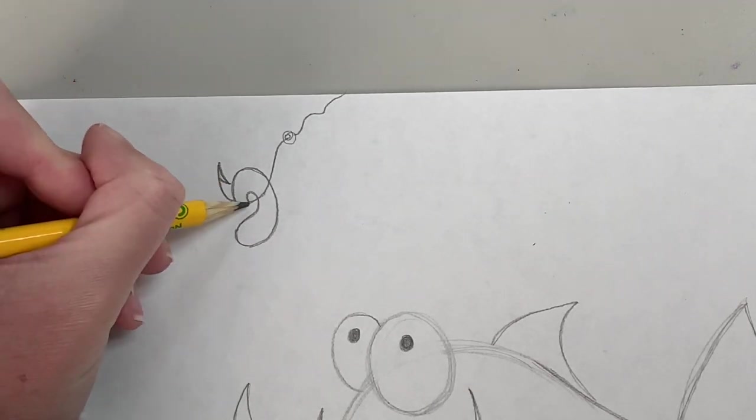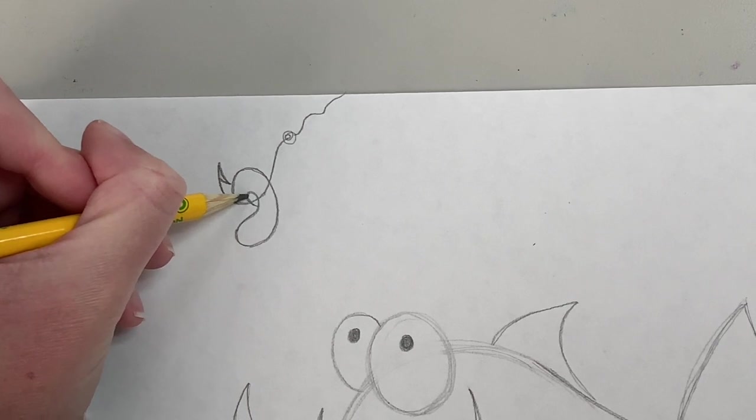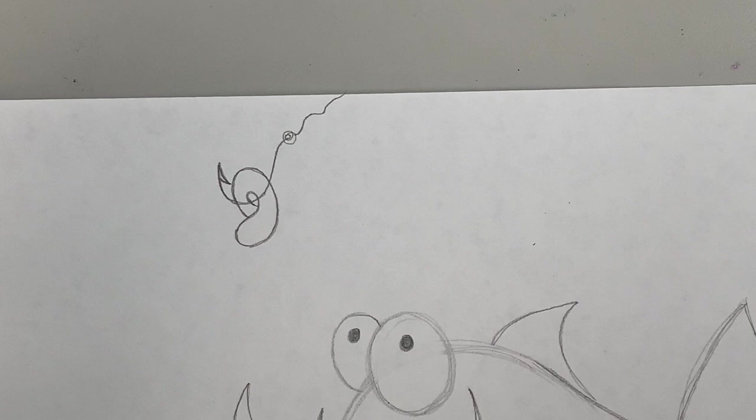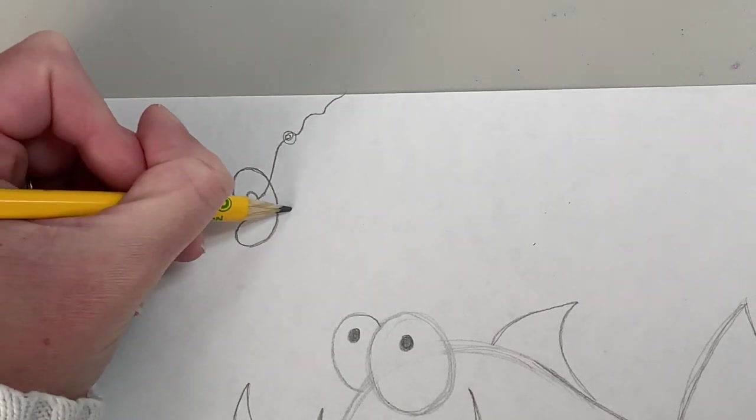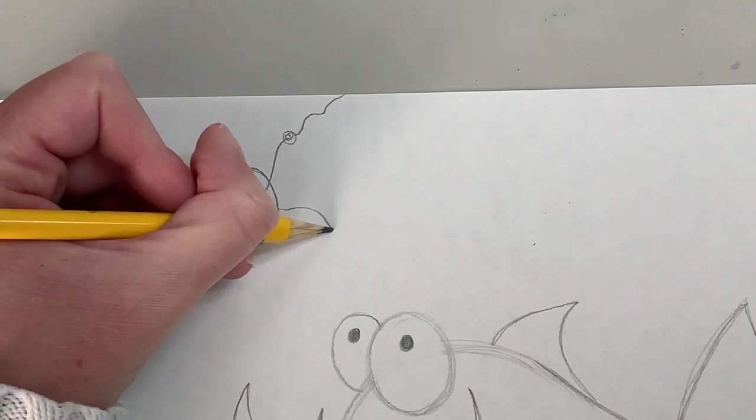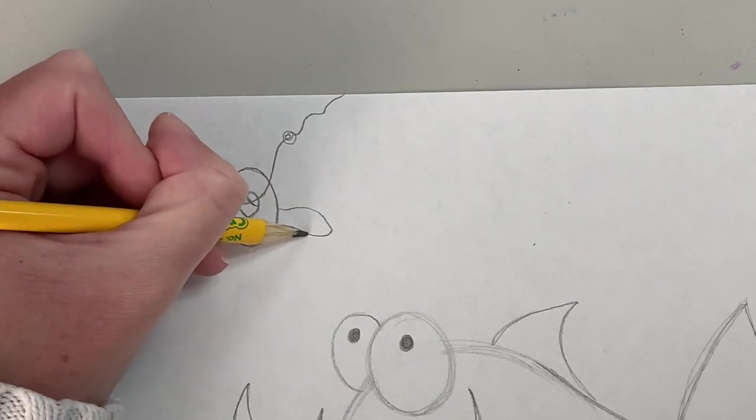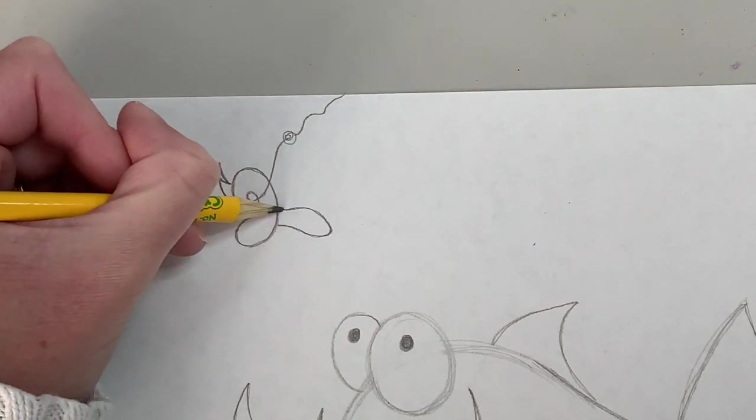And then we want to continue his body. So we're going to have this little line here, this little line here. And then we want to imagine it coming out behind the front of his body. So there's the back end of our worm.